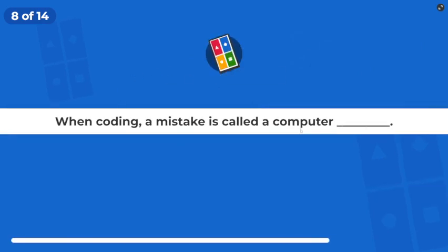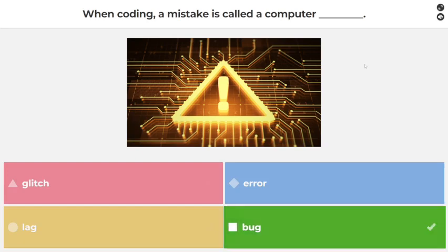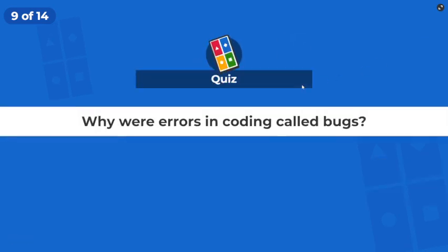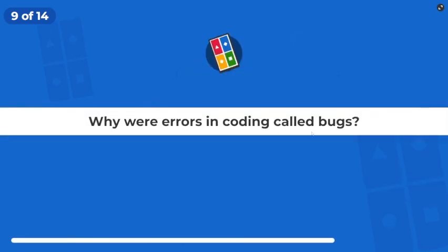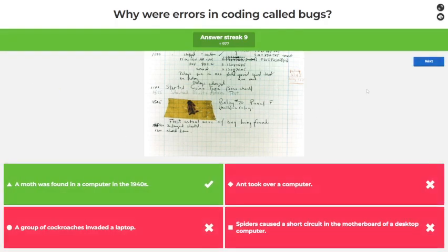When coding, a mistake is called a computer bug. Yeah! Why are errors in coding called bugs? Because a moth was found in the computer in the 1940s. True story - it was stuck to the bug report. What was the name of the first coding language used to...